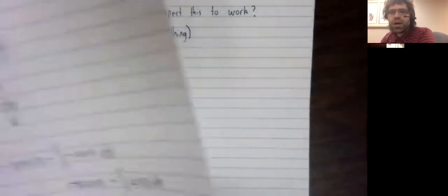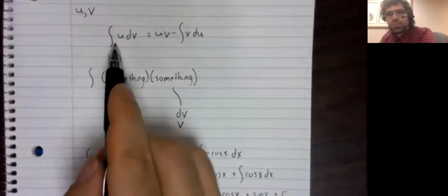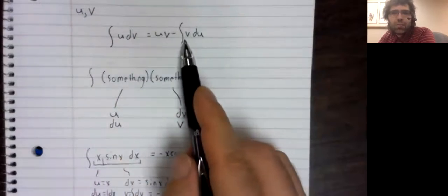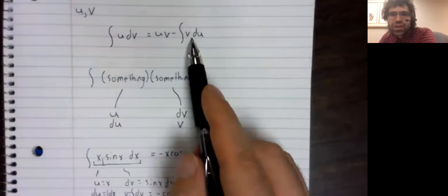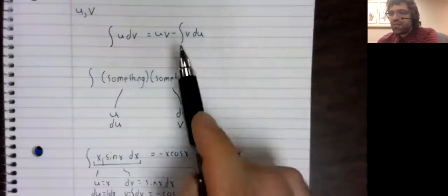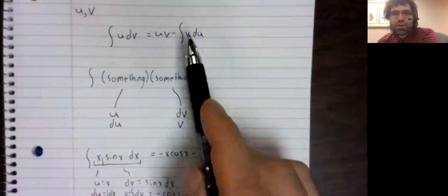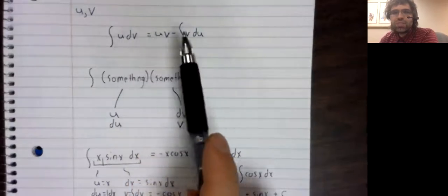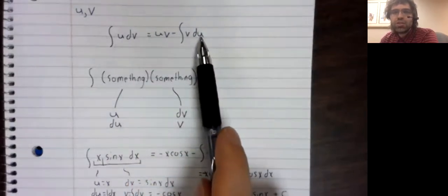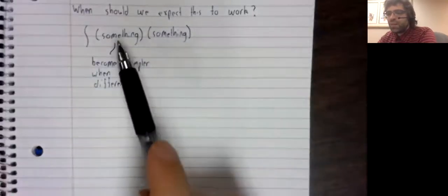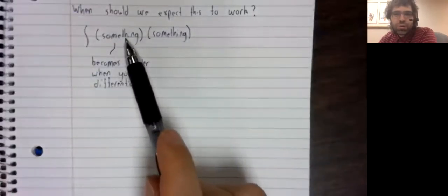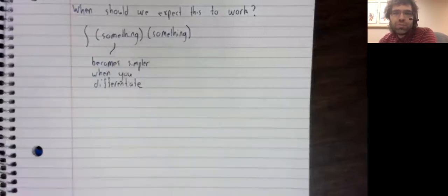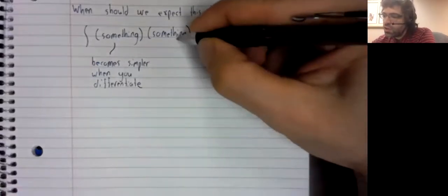I mean, consider what integration by parts does. It starts with the integral of a product. And it ends with the integral of a product. So what we really need is for this product to be simpler than this product. And since U is being replaced by dU, if this becomes simpler when we take the derivative, if dU is simpler than U, that's surely a good thing.